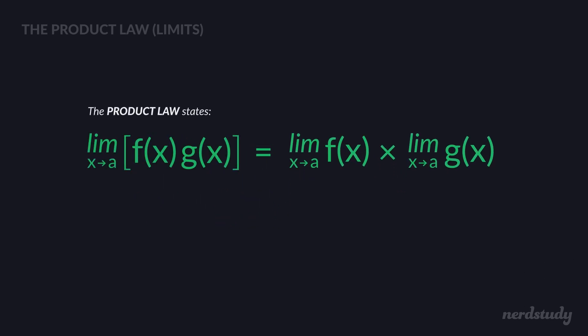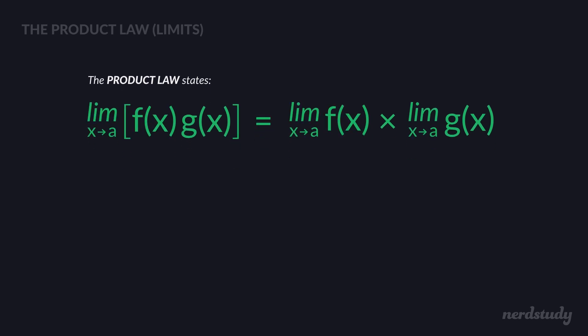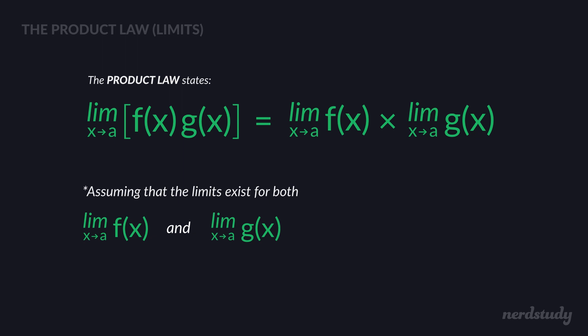As you can see, there's f of x and g of x. What we do is get the limit of just f of x and multiply it with the limit of just g of x. You can do this so long as the limit as x approaches a for both f of x and g of x exist. If either one doesn't exist, then we can't use the product law.